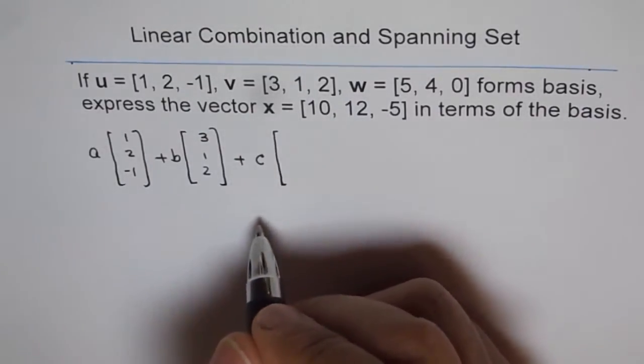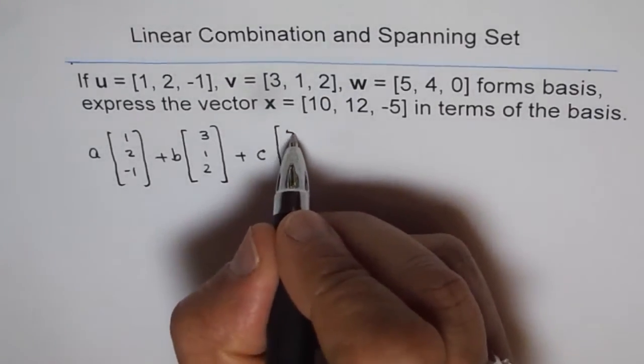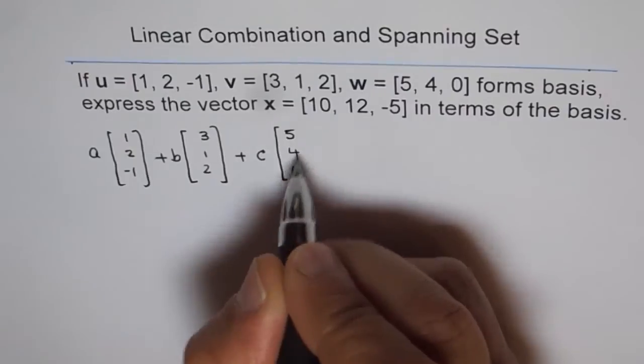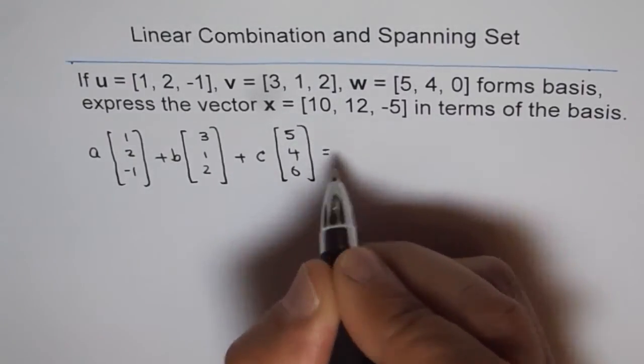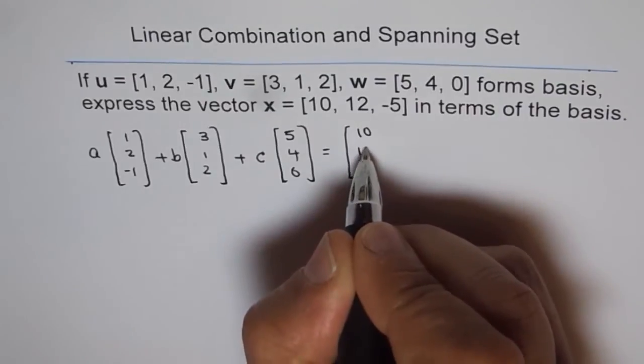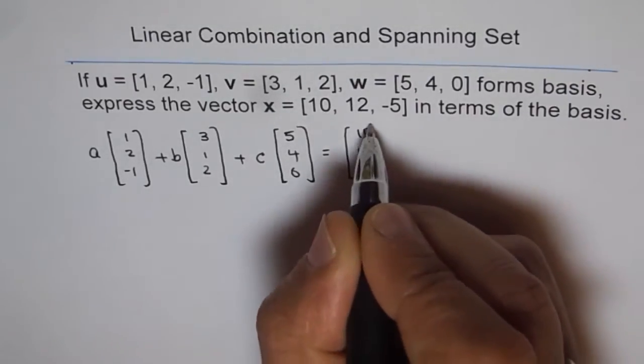So I missed that one. So you can add that in your solution. So c times w, which is 5, 4, and 0, should be equal to vector x, which is 10, 12, minus 5.